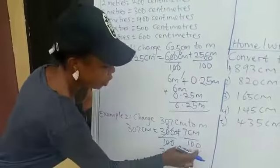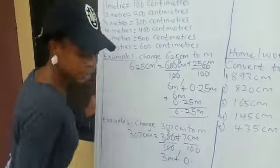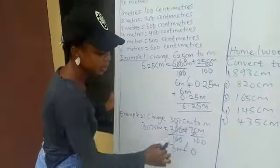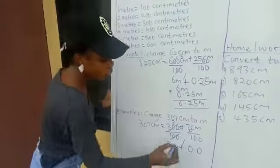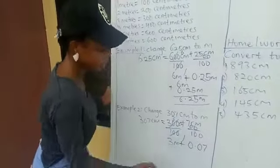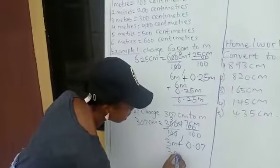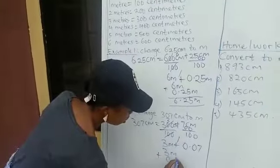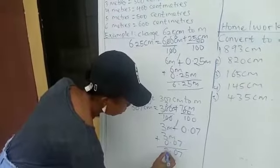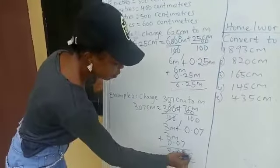How many hundreds can we see in 7? It's impossible. You write 0, put your decimal point, add 0 to make 70. How many hundreds in 70? Impossible — put 0 again. Add 0 to make 700. How many hundreds in 700? That's 7. So that gives 0.07. Adding together: 3 meters plus 0.07. Our final answer is 3.07 meters. Don't forget to put your unit, meter.